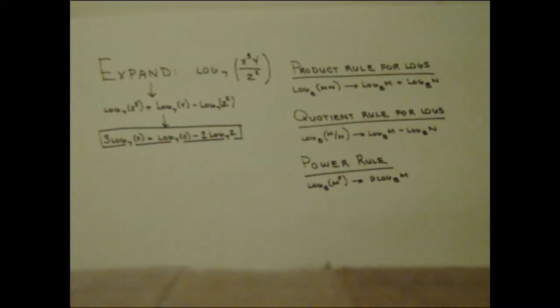Lastly, we can move the exponents from the inside of the log and make them coefficients. This leaves us with the final answer of 3 log base 7 of x plus log base 7 of y minus 2 log base 7 of z.